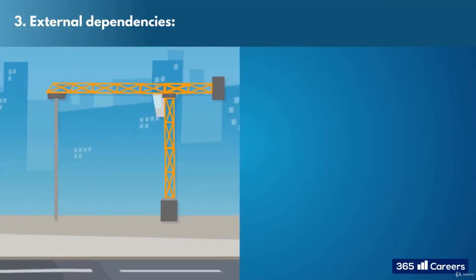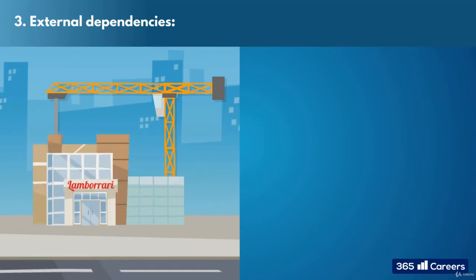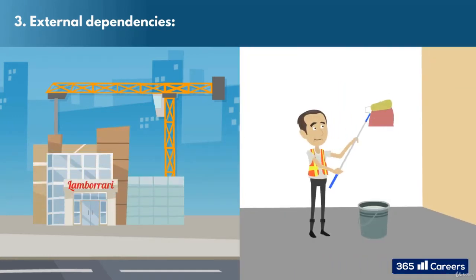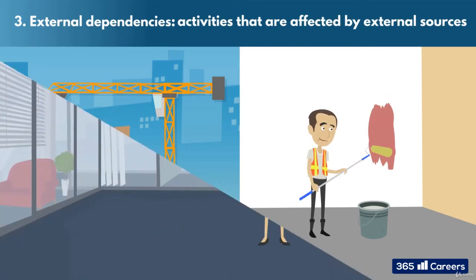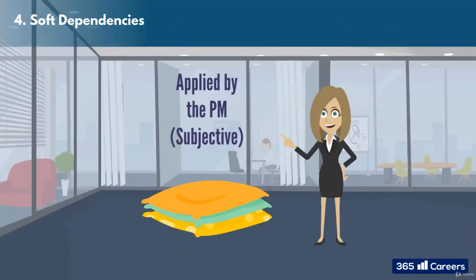Third, we have external dependencies. These can be anything from building work that needs to be signed off by the city, to paintwork that can only be done in good weather — the activities that are affected by external sources. The fourth are called soft dependencies. These are applied by the project manager themselves, and could include things like a task not going forward unless the project manager has checked the previous task. They are called soft dependencies as they are easily amendable due to the fact that the project manager set them in the first place.